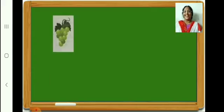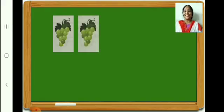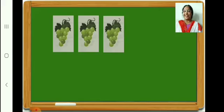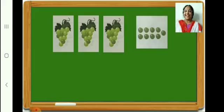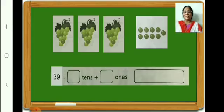How many grapes in the first box? 10. In the second box? 10. In the third box? 10. In the fourth box, count and see — 9. In all, count and see — 39. Therefore, 39 is equal to 3 tens plus 9 ones. Write it down in your book.